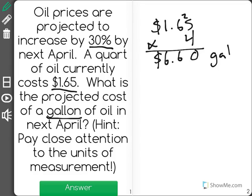Now the projected cost is supposed to go up by 30%, so I'm going to multiply 660 times 30% to find what the increase in price will be. When I multiply this out, you'll see that I get $1.98.